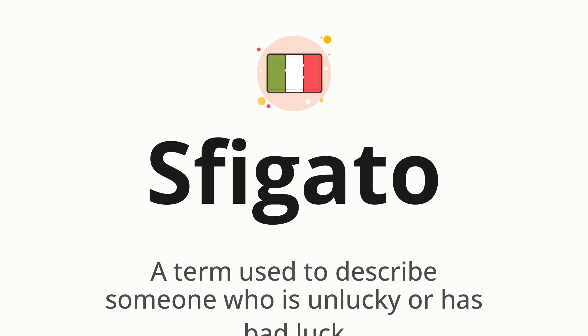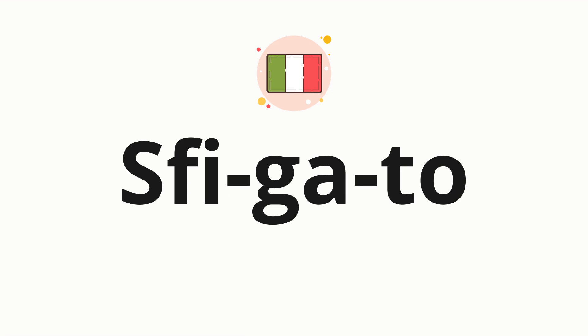Let's say it all together. Trattino. One more time. Trattino. Now, let's split the word into syllables, and then pronounce each syllable one by one.